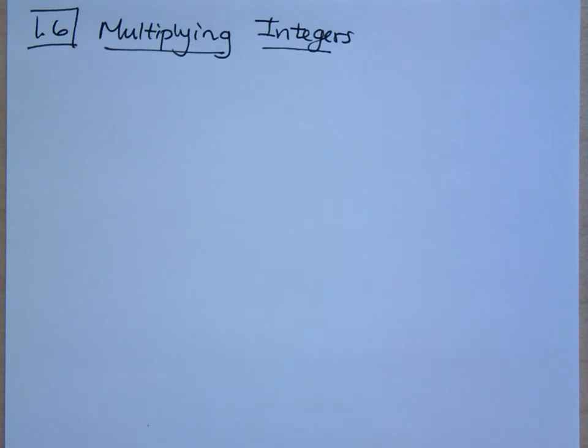Adding and subtracting is very prejudiced. You have to have things that look alike. With fractions, you have to have like denominators. You have to have like terms. They have to look the same.